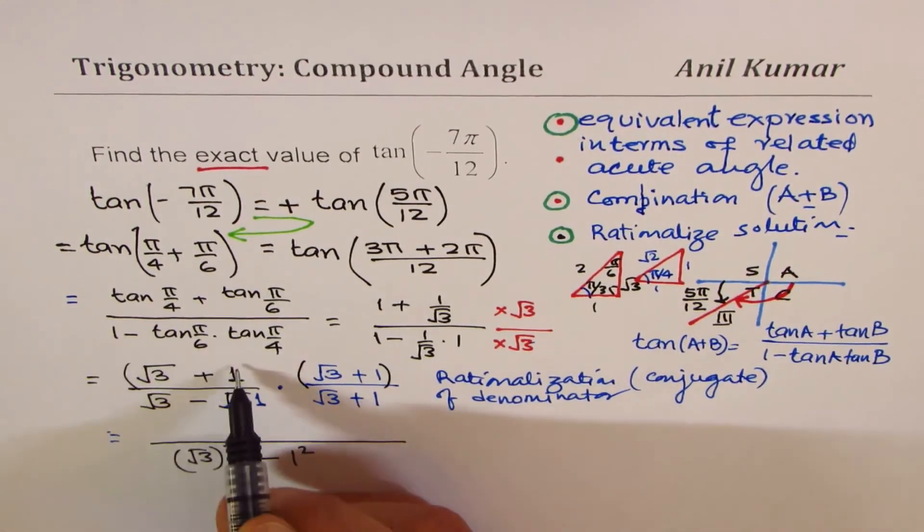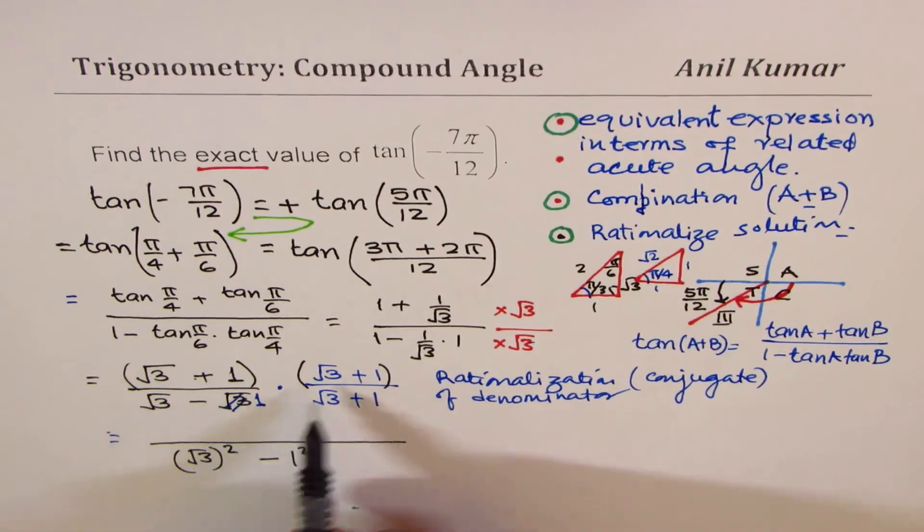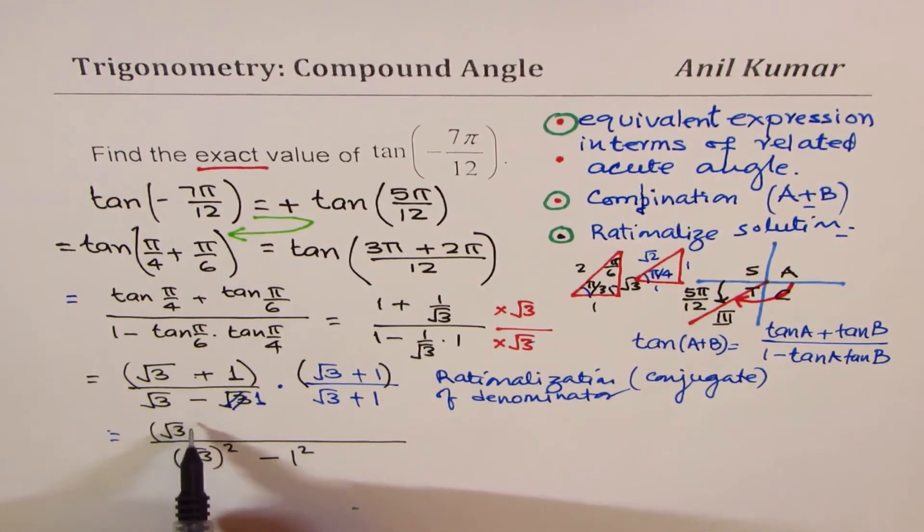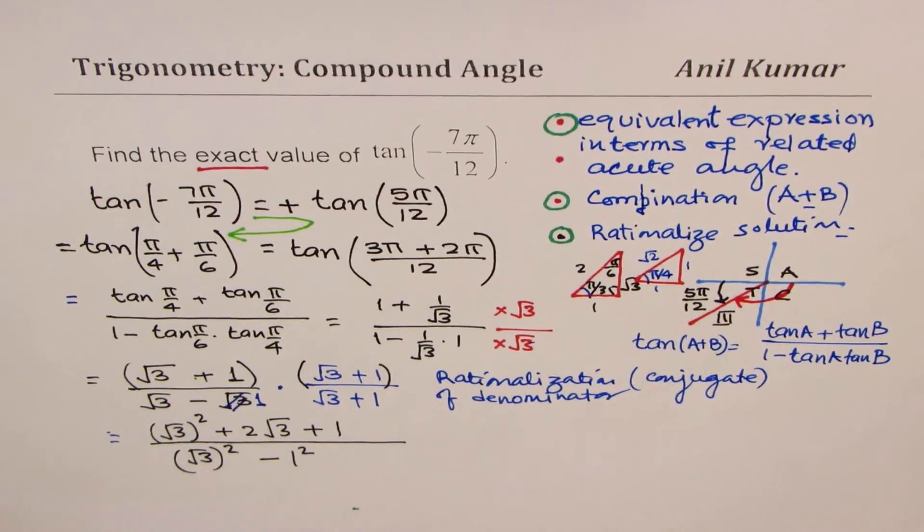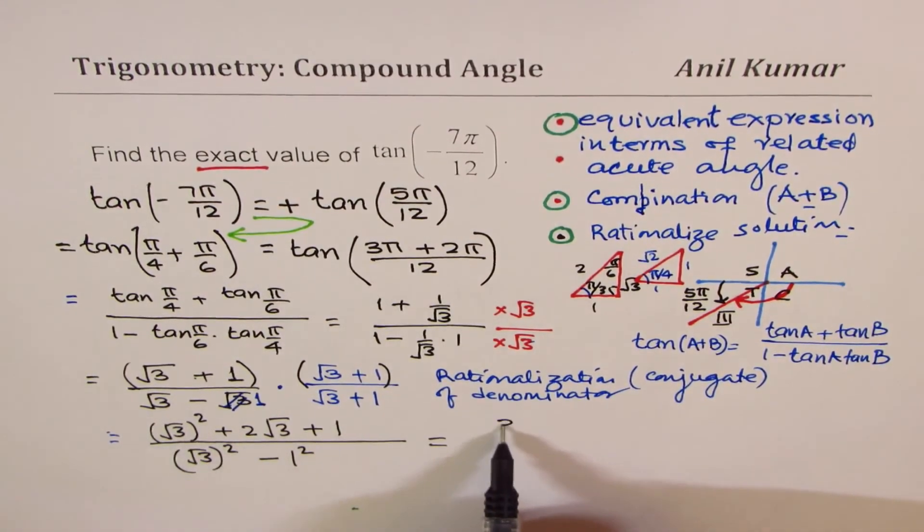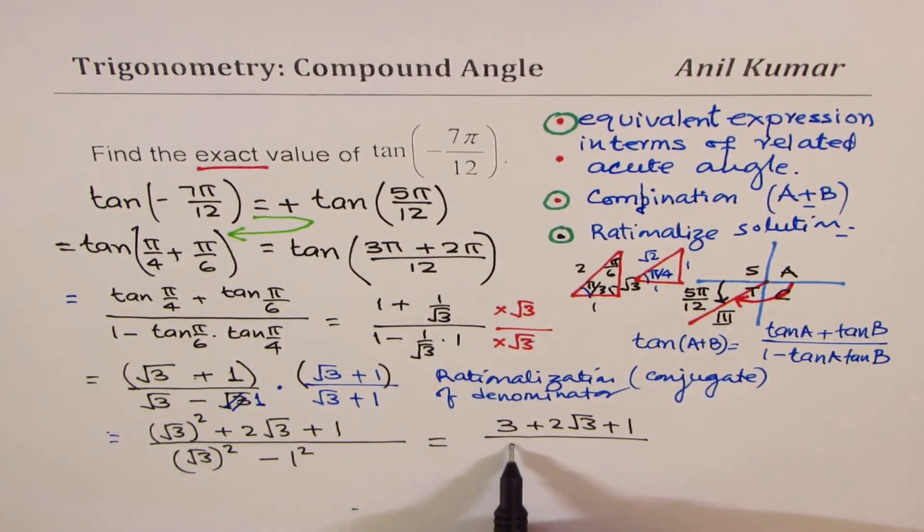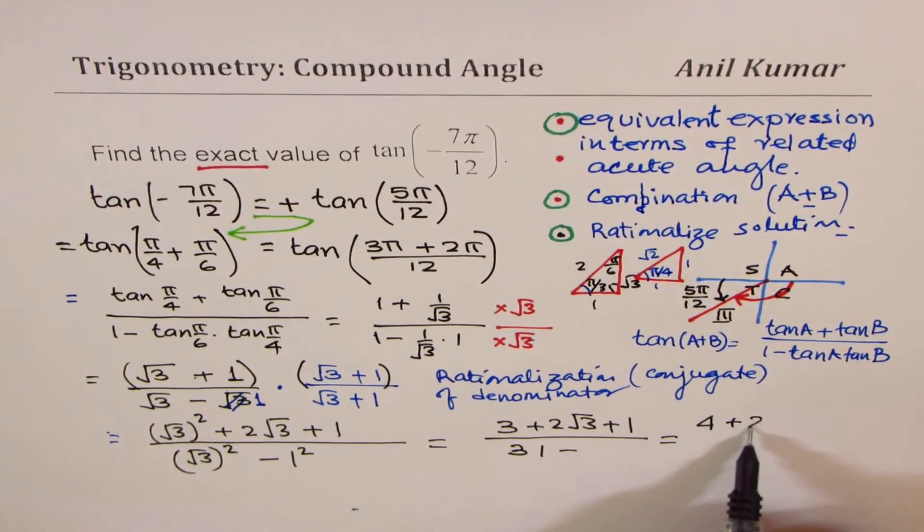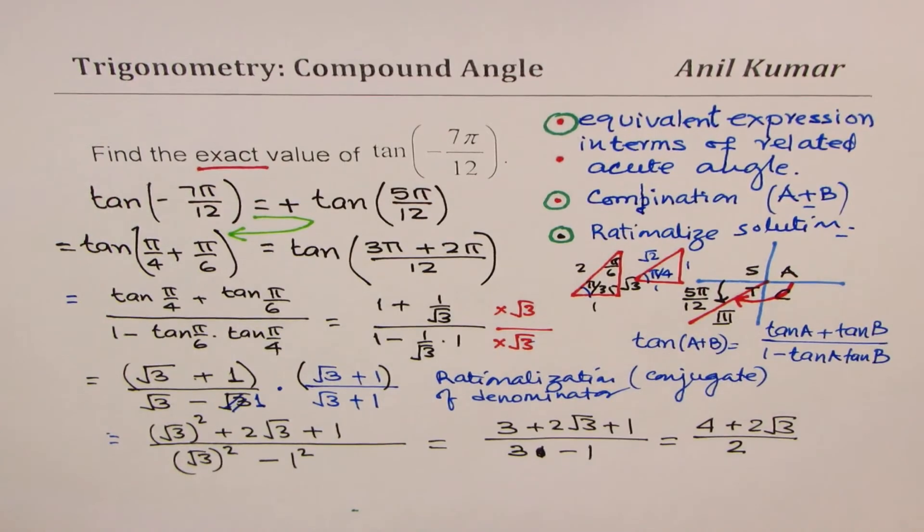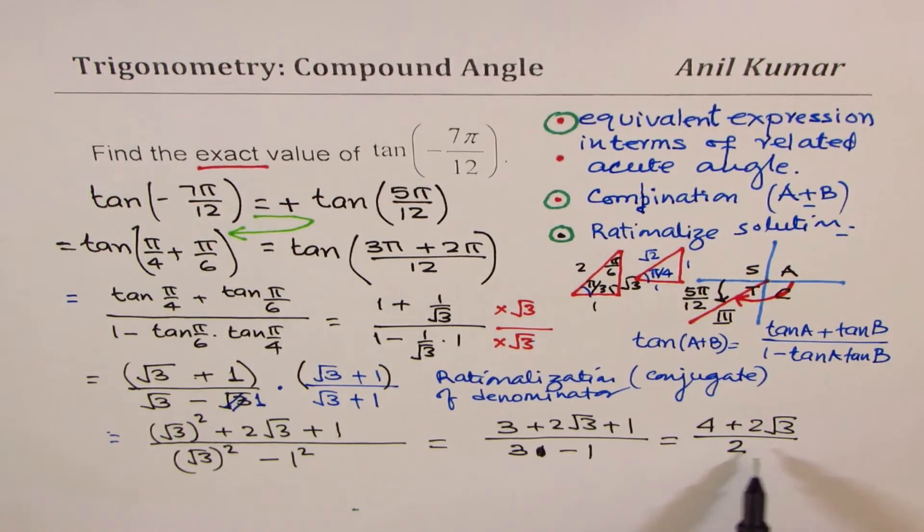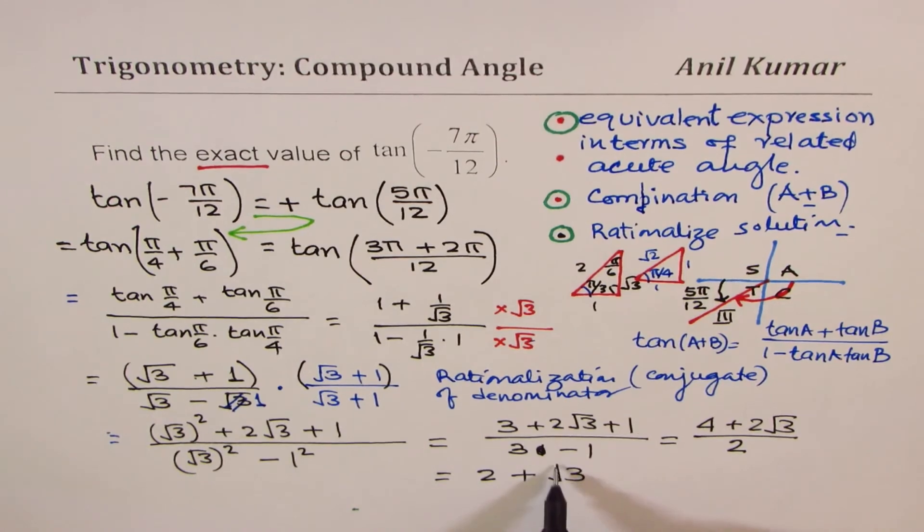In the denominator we get (√3)² minus 1². The numerator will multiply each term, so you get (√3 + 1)². Which is 3 plus 2√3 plus 1 divided by 3 minus 1. So here you get 4 plus 2√3 and the denominator is 2. You get (4 + 2√3)/2, and you can divide each term by 2 to write your final answer, which is 2 + √3.